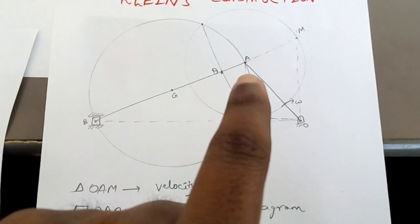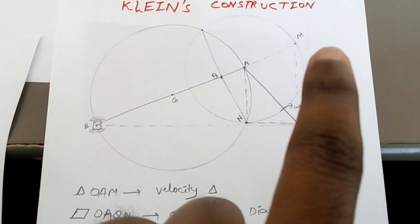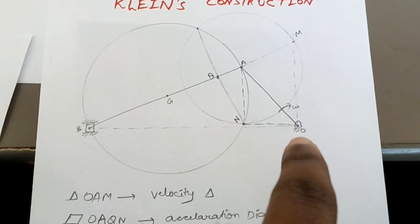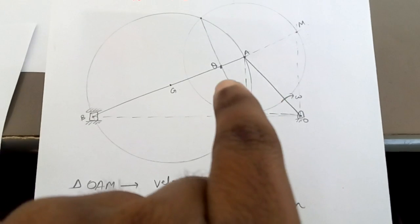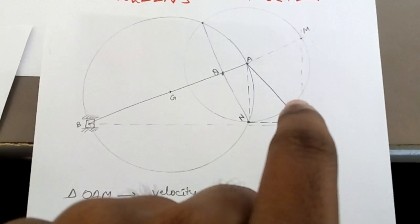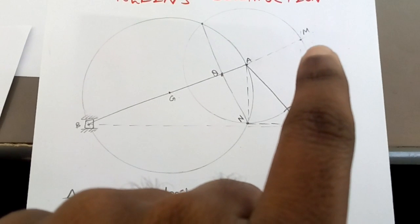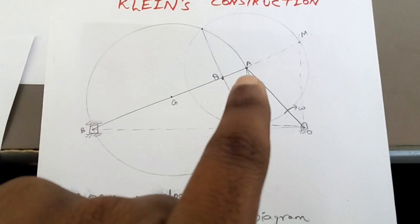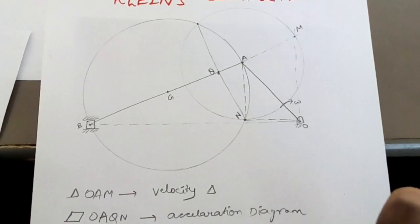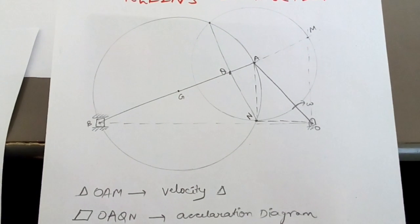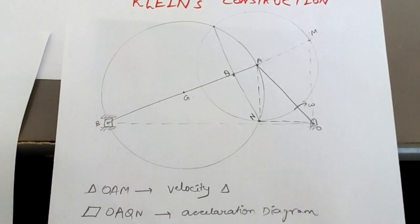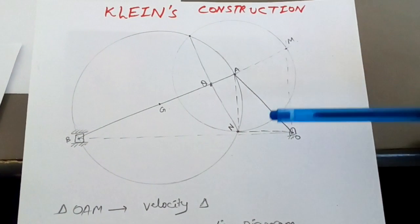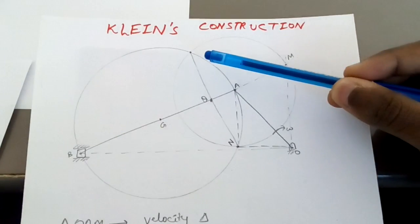That is point A, which lies on the intersection of crank OA and connecting rod AB. You project point A, extend AB, and draw a perpendicular from point O. Wherever they meet, you call it point M. So this is one point. Now you have to draw another circle taking radius equal to AM.